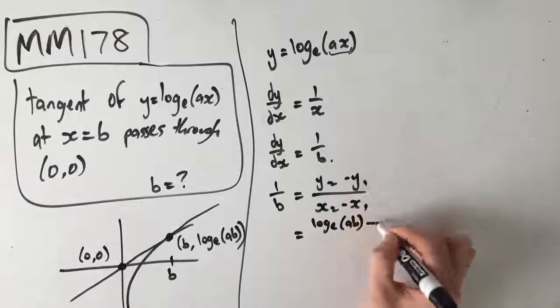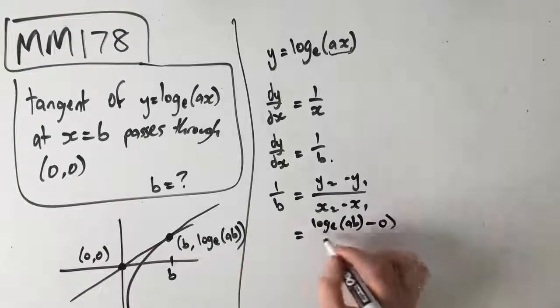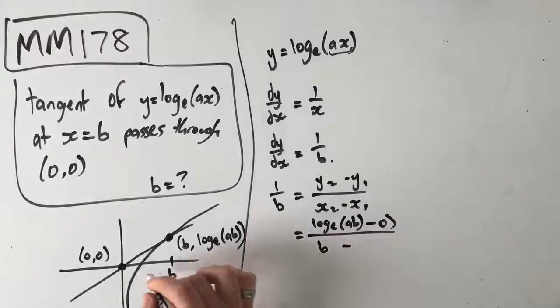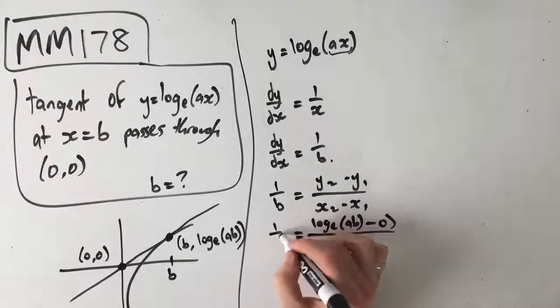where our second y value is log_e(ab) minus y1, which is just 0, over x2, which is b, minus 0